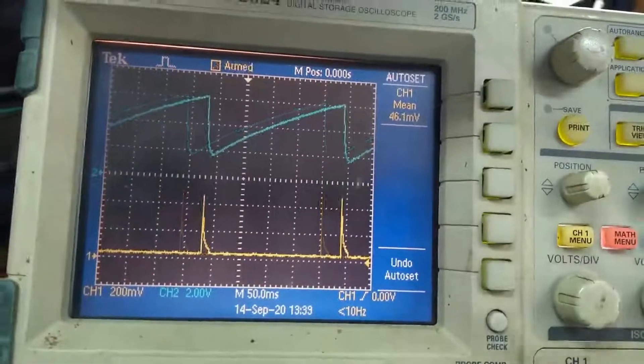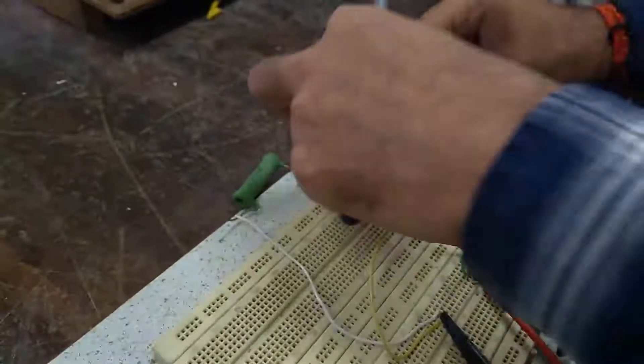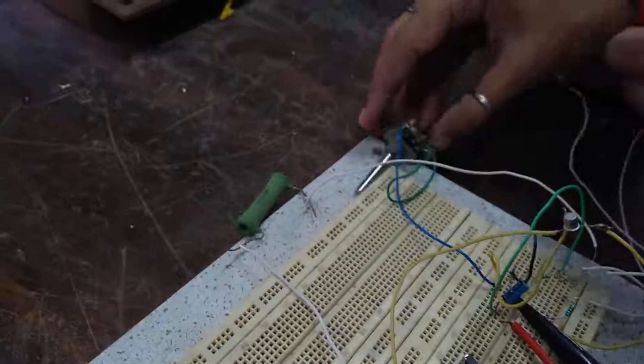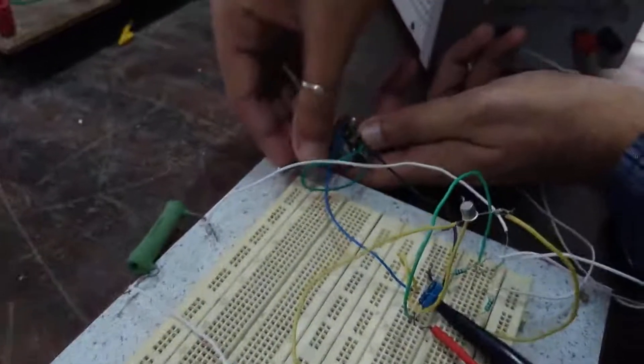Now if we change this pot values, we can see that the frequency of the application or the frequency of the occurring of the pulses will be changed. We can observe on the DSO.